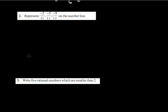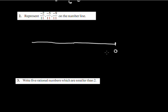The second question: I have to represent -2/11, -5/11, and -9/11 on the number line. All these numbers will lie between 0 and -1. So I will divide the region between 0 and -1 into 11 equal parts, which means I will draw 10 lines.